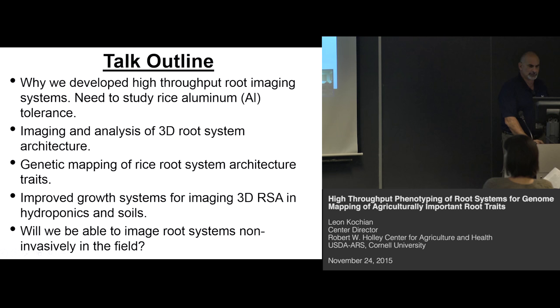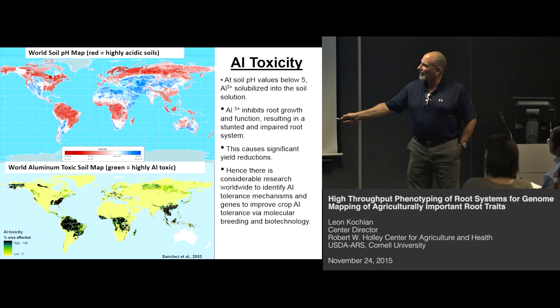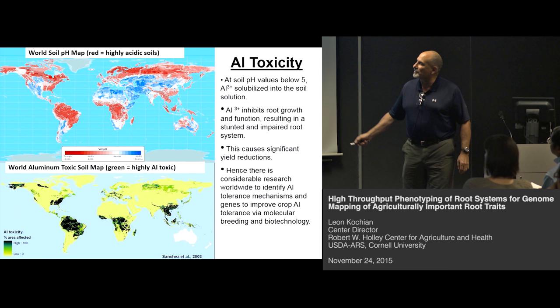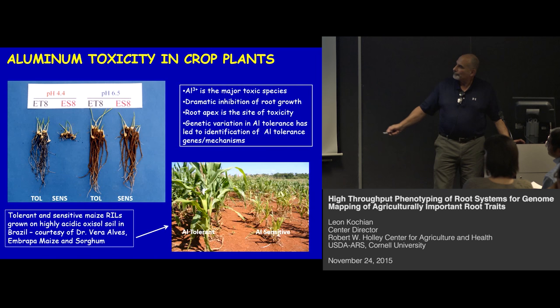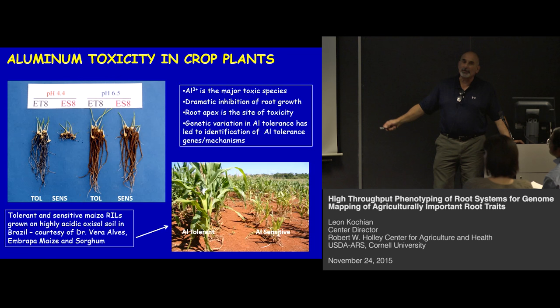Aluminum toxicity is something my lab has been studying for about 25 years. These red zones on the map are highly acid soils with pH of five and below, and they're very extensive, particularly in the tropics and subtropics where many developing countries reside. On these aluminum toxic soils, aluminum toxicity results in a very rapid inhibition of root growth, and because of drought and mineral nutrient deficiencies, you can get significant yield reductions.